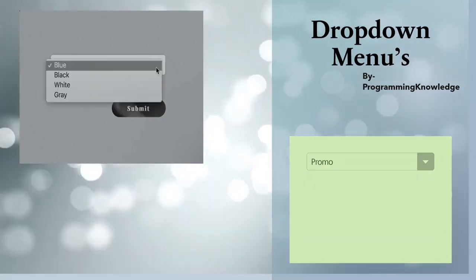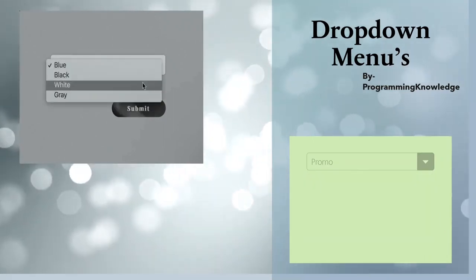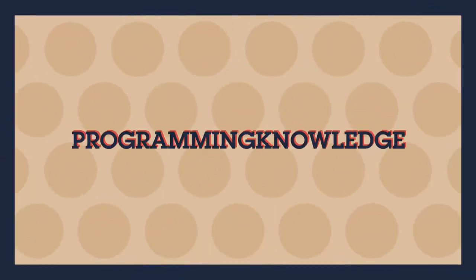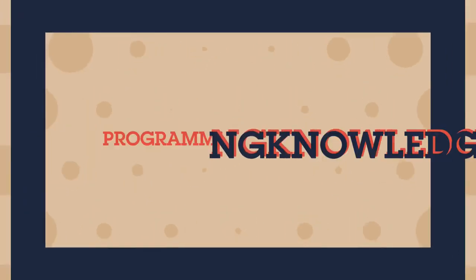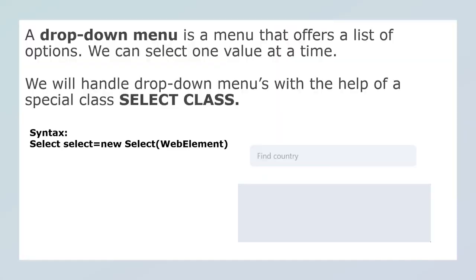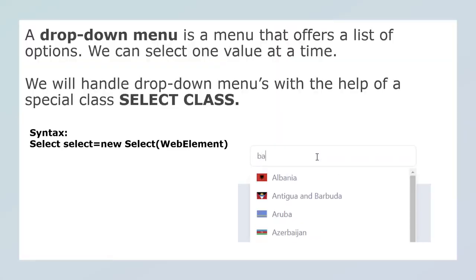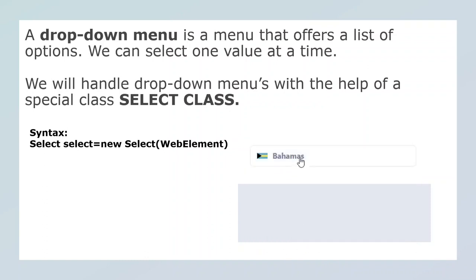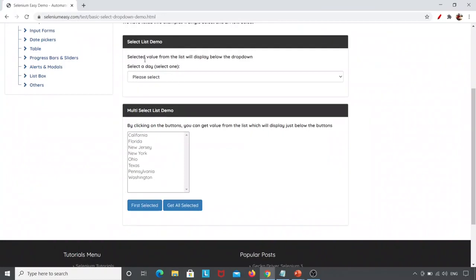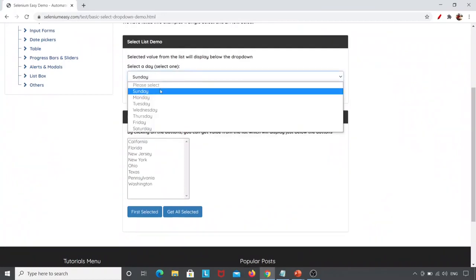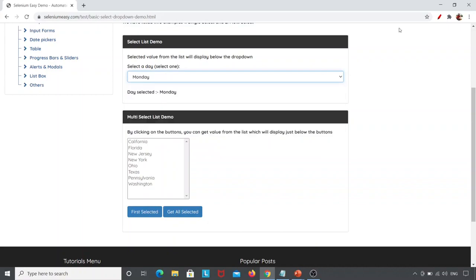Hello everyone, this is Varsha and welcome to Programming Knowledge. Today we are going to learn about drop-down menus. A drop-down menu is a menu that offers a list of options and we can select one value at a time. For example, here you can see this is the drop-down menu — I can select any one value at a time.